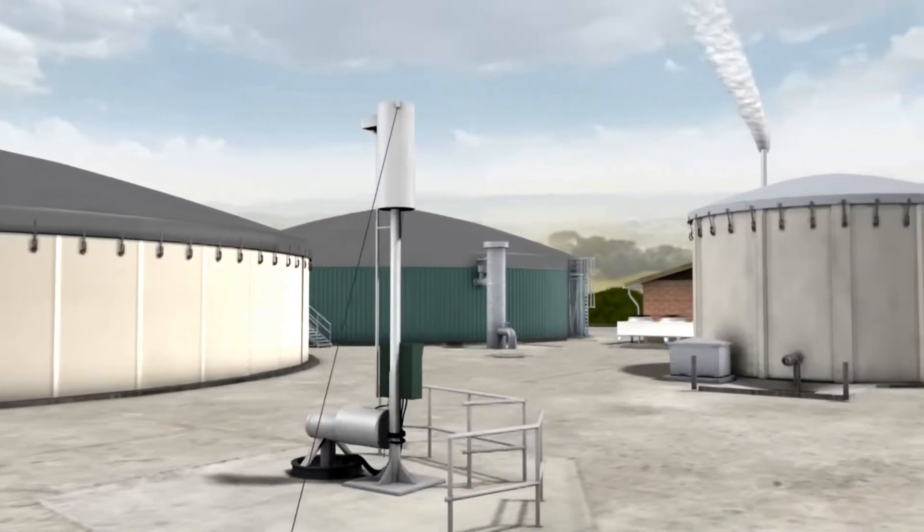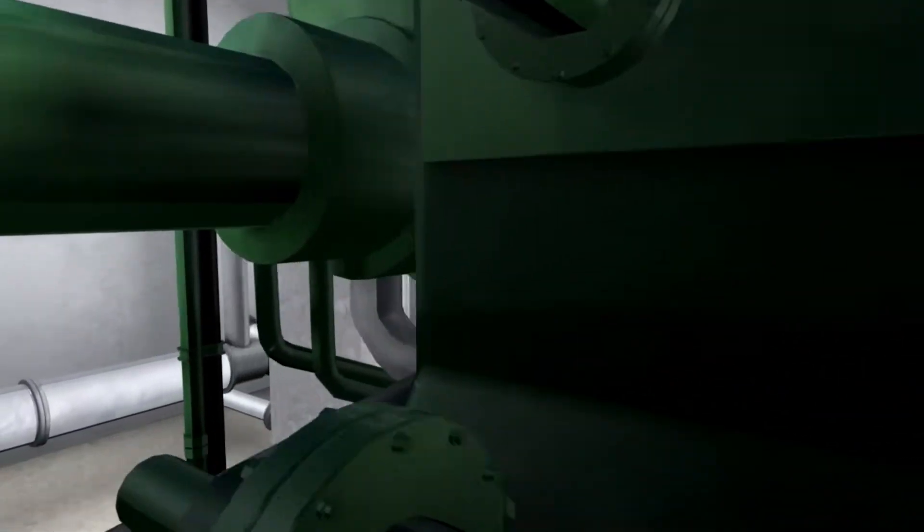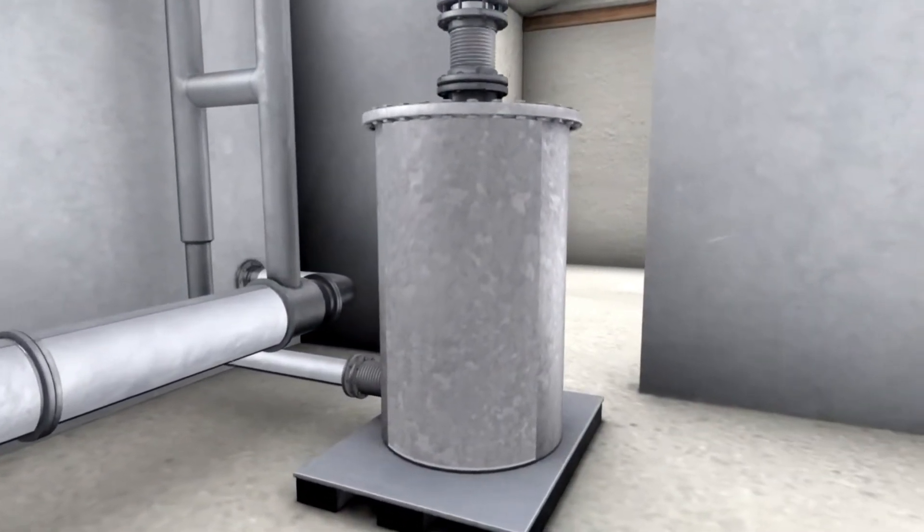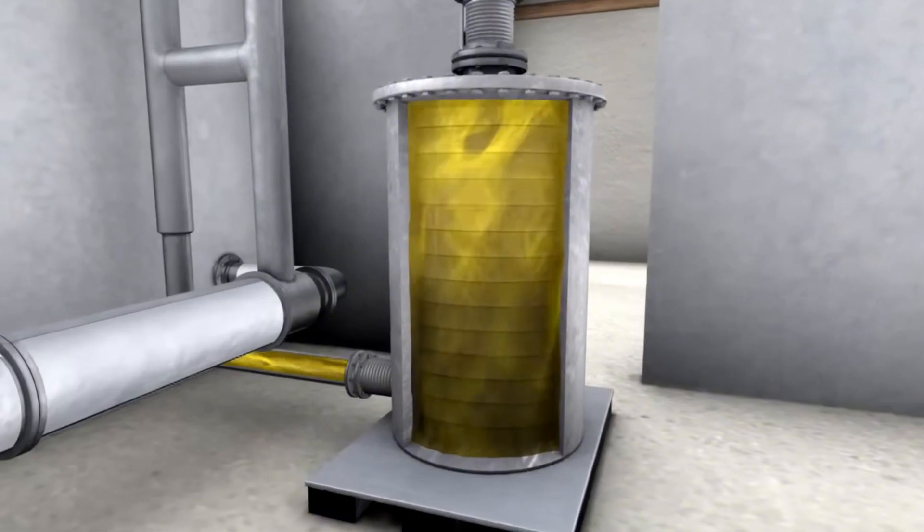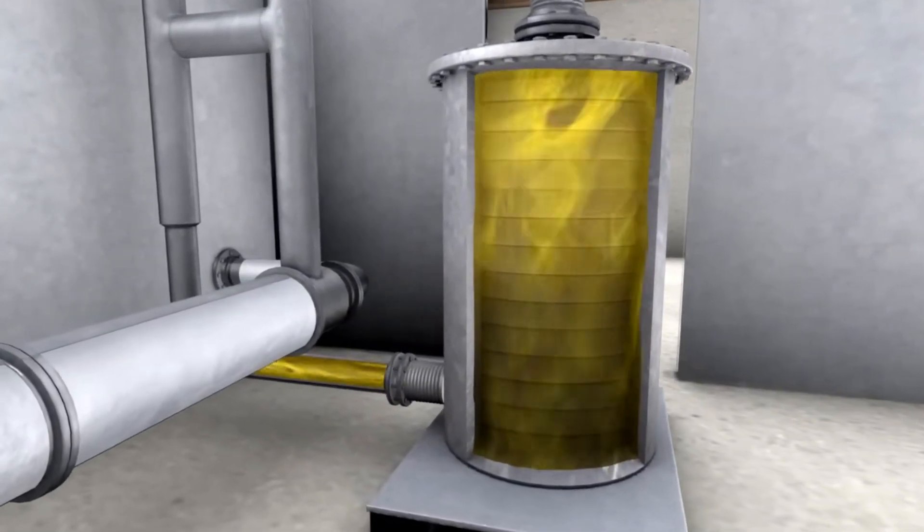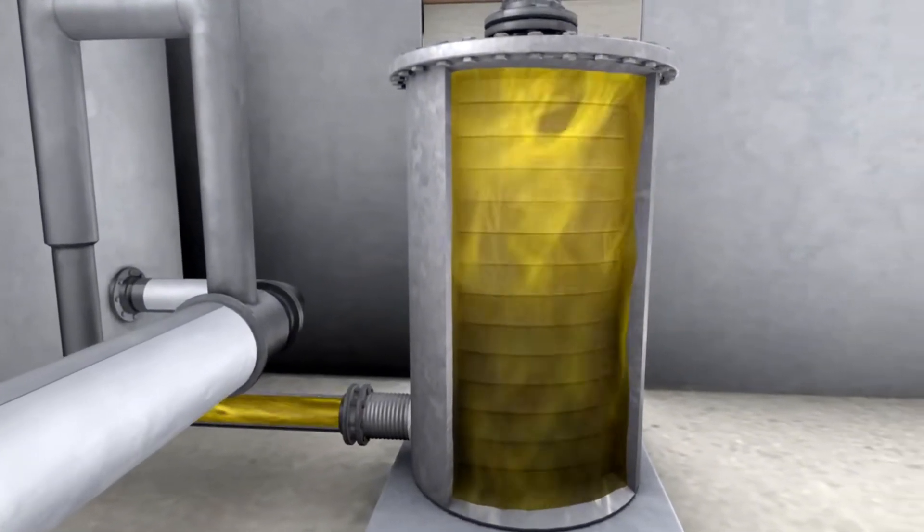Before the biogas is fed to the combined heat and power plant for combustion, it passes through an activated carbon filter. The filter serves for removing the remaining hydrogen sulfide from the already desulfurized biogas. The concentration of hydrogen sulfide is measured so that you know in advance when the activated carbon filter is fully loaded and must be replaced.